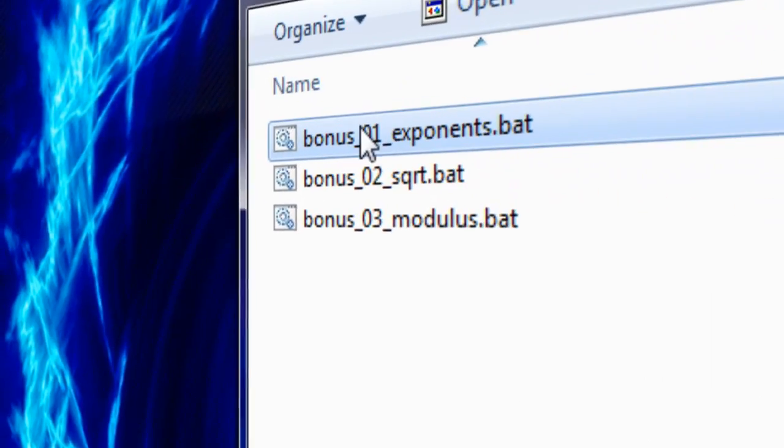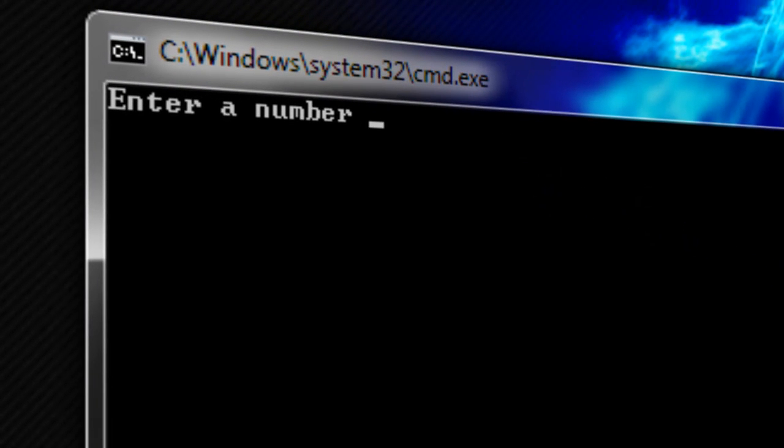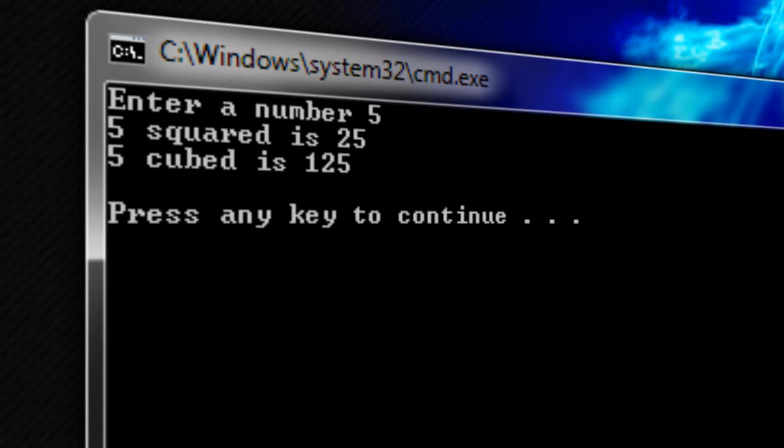If we execute our script, when prompted for a number, enter any number. I will enter 5 and press enter. The console displays the results: 5 squared is 25, and 5 cubed is 125.